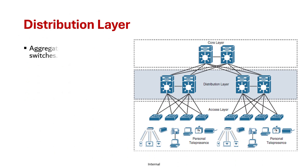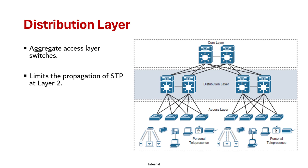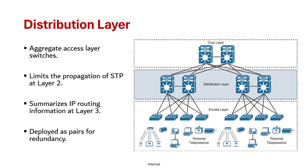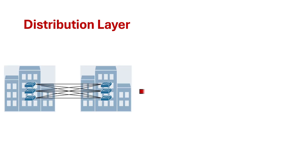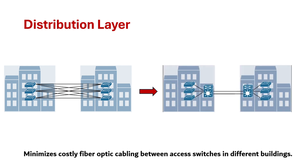The primary function of the distribution layer is to aggregate access layer switches in a given building or campus. It provides critical boundary functionality: at Layer 2 it limits the propagation of STP, and at Layer 3 it summarizes IP routing information to reduce complexity. Distribution switches need to be deployed in pairs for redundancy, interconnected with Layer 2 or Layer 3 links. In large organizations with geographically dispersed buildings, multiple distribution layer switches are required, which can minimize costly fiber optic runs by strategically placing them in different buildings.